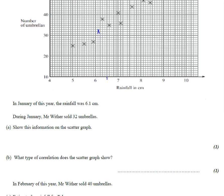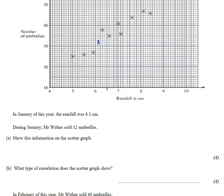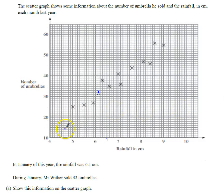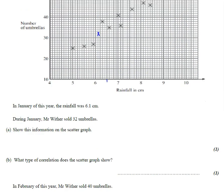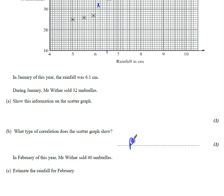Next one says, part B says what type of correlation does this show? Well we can see as the rainfall increases, the number of umbrellas increases, we've got a nice uphill trend, so we've got a positive correlation.